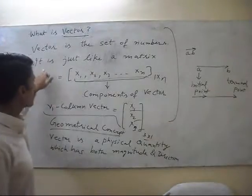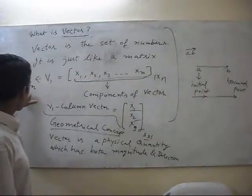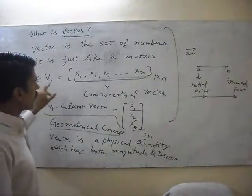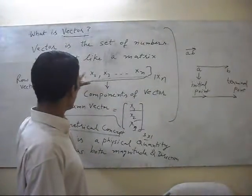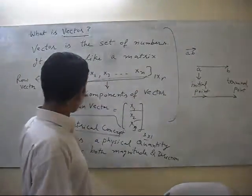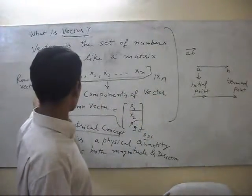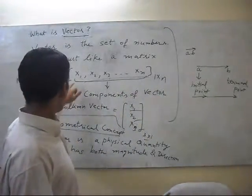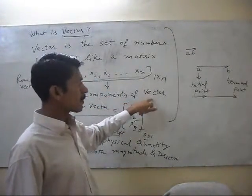What is row vector? If there is a single row and lots of columns, that vector will be called row vector. And these numbers are called components of vectors.